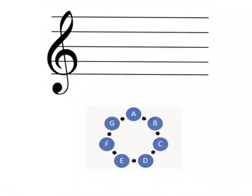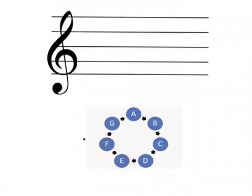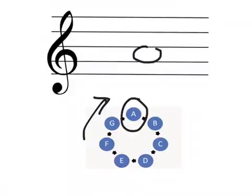Next, we will go up to the second line in the treble clef staff. Following our clockwise pattern, you can see that that note will be G. The G note sits on the second line in the treble clef staff. We will move on to the next letter, which if we follow our pattern again, we will get A. A sits in the second space on the treble clef staff.